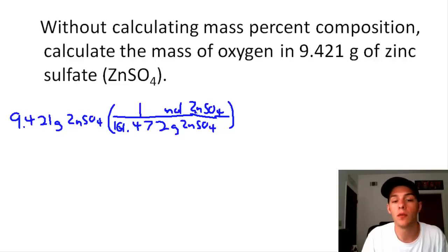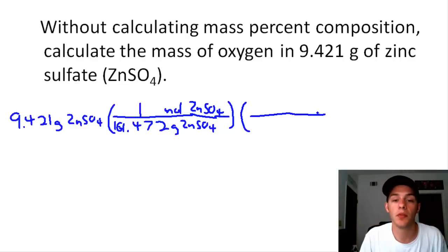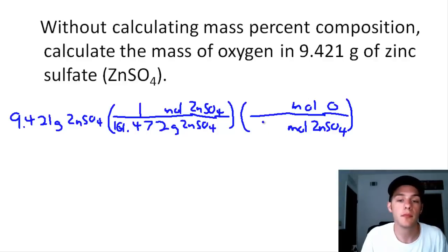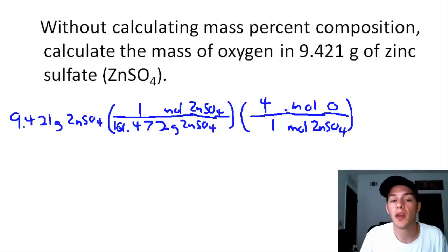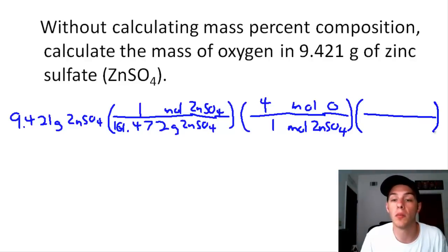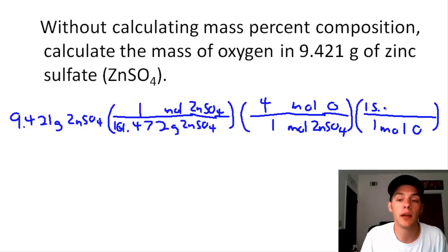Now that we have moles of zinc sulfate, we use the chemical formula as a conversion factor to convert to moles of oxygen: 1 mole of zinc sulfate on the bottom, 4 moles of oxygen on top, because there are four oxygen atoms in every formula unit of zinc sulfate. Now we convert from moles of oxygen to grams of oxygen using the molar mass of oxygen: 1 mole of oxygen on the bottom, 15.9994 grams of oxygen on top.